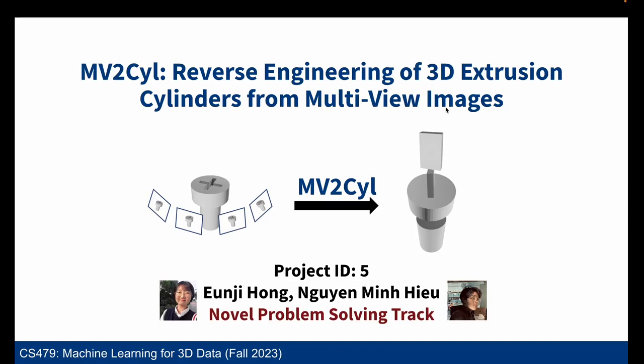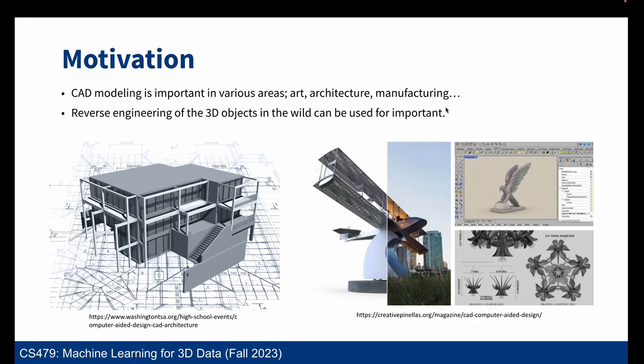Our motivation: CAD modeling is an integral part of computer graphics with numerous applications such as architecture, art, and manufacturing. We are particularly interested in the reverse CAD problem where CAD representation is reconstructed from multiview images. Since CAD models can be tedious and require expertise in 3D modeling, such methods would prove extremely useful when manufacturers want to recover lost models from only images, or when sculptors and engineers want to fabricate models based on CAD but cannot model CAD. To our knowledge, this work is the first to tackle such a problem.